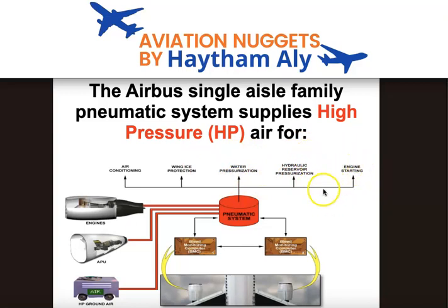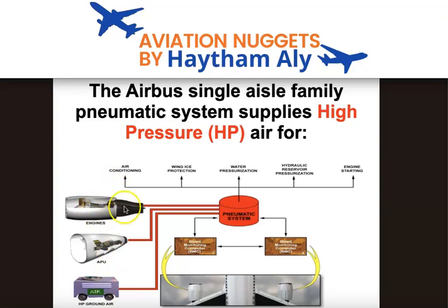What about the sources of the pneumatic system in the Airbus A320 family? The main pneumatic system source is the main engines — engine number one and engine number two, giving us bleed system one and bleed system two. The APU may also be used as a source of bleed air to start the main engines. Additionally, on the ground, high pressure ground air units may be used to supply the pneumatic system.